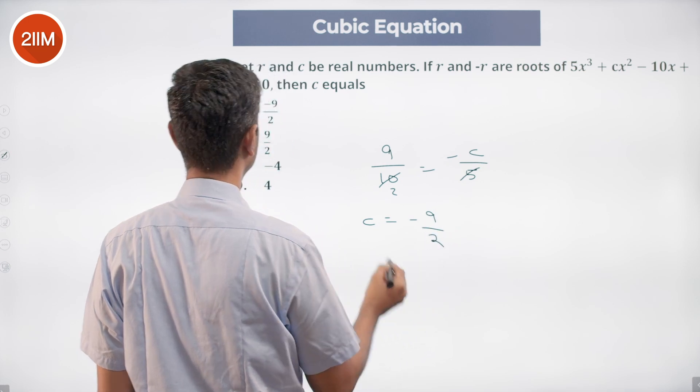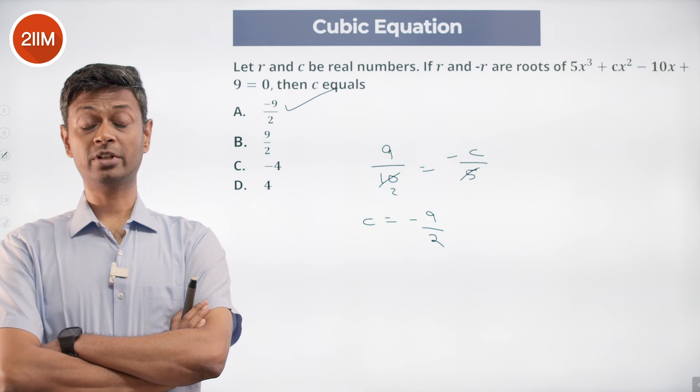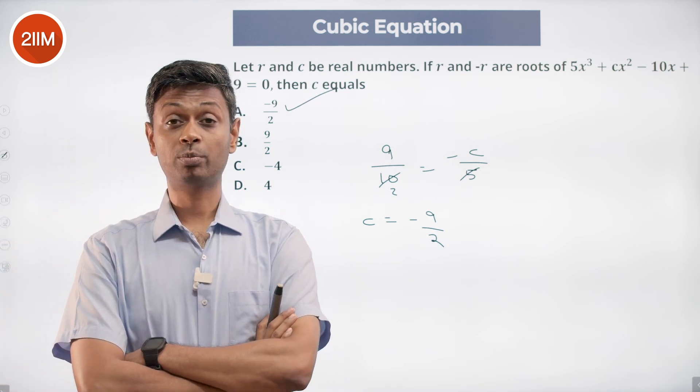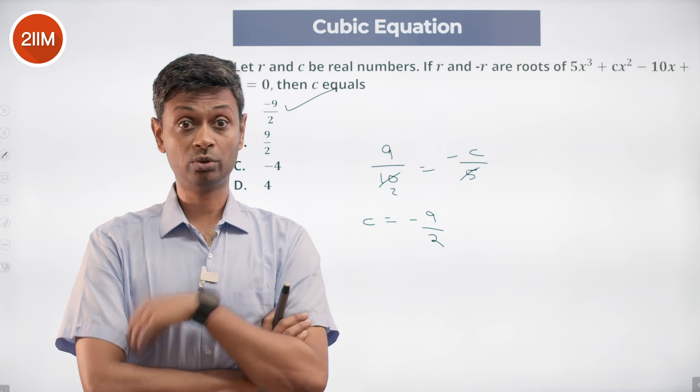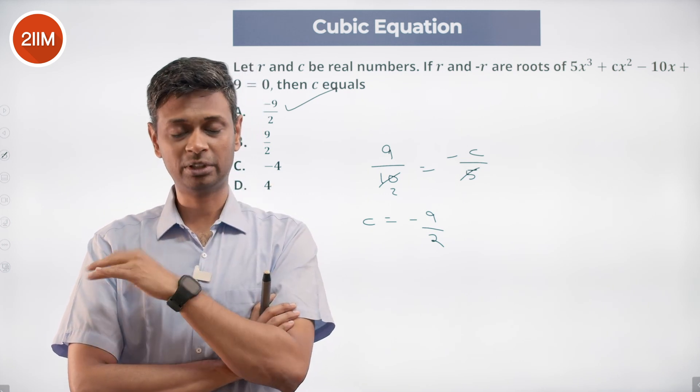I think there's no rocket science here to manage the equations, manage some algebra. Get comfortable with r, -r, and p. Sum of the roots, product of the roots taken two at a time, three at a time. Be careful with minuses and pluses, then you're through.